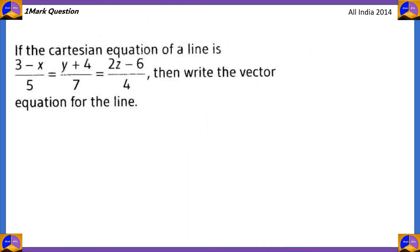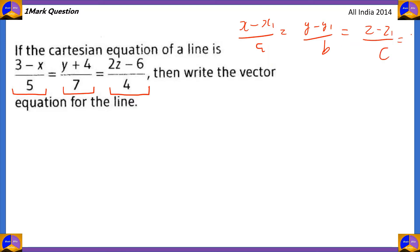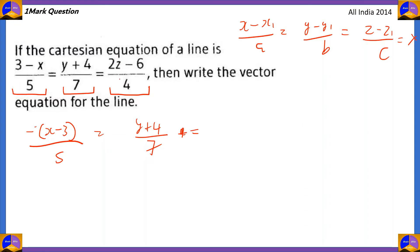Next question: If the Cartesian equation of a line is (3−x)/5 = (y+4)/7 = (2z−6)/4, then write the vector equation of the line. The general formula for a Cartesian equation is (x−x1)/A = (y−y1)/B = (z−z1)/C = λ. There is a difference, so we need to convert it to standard form.